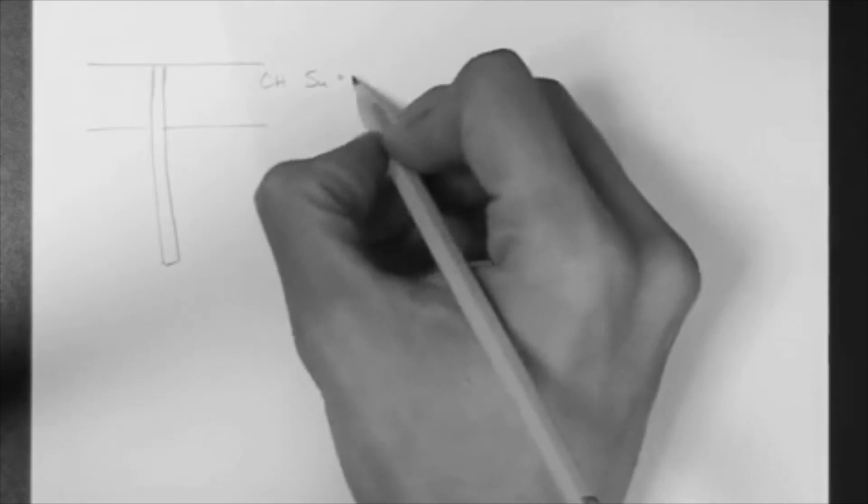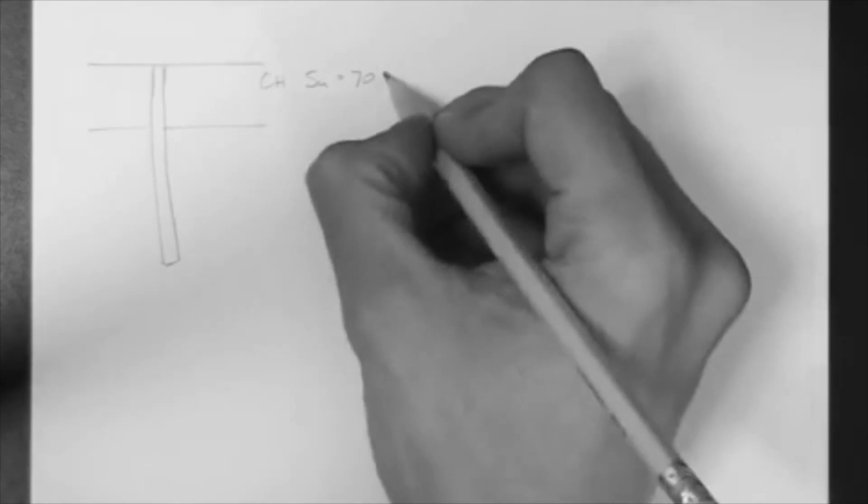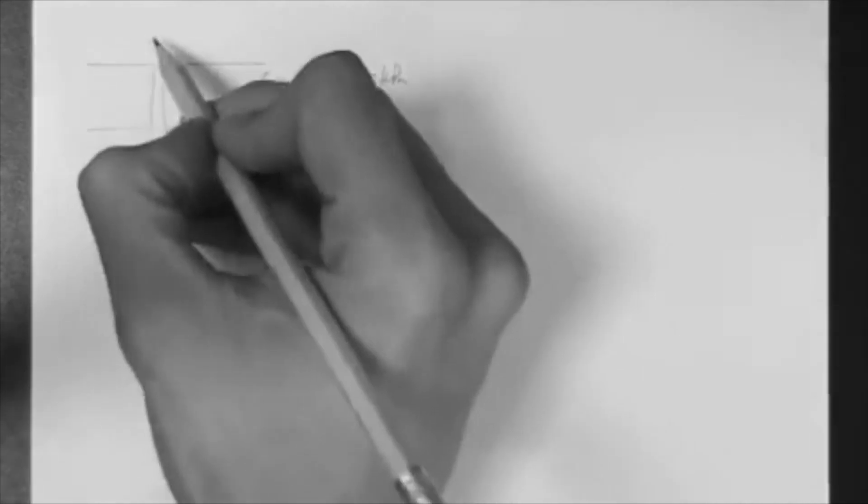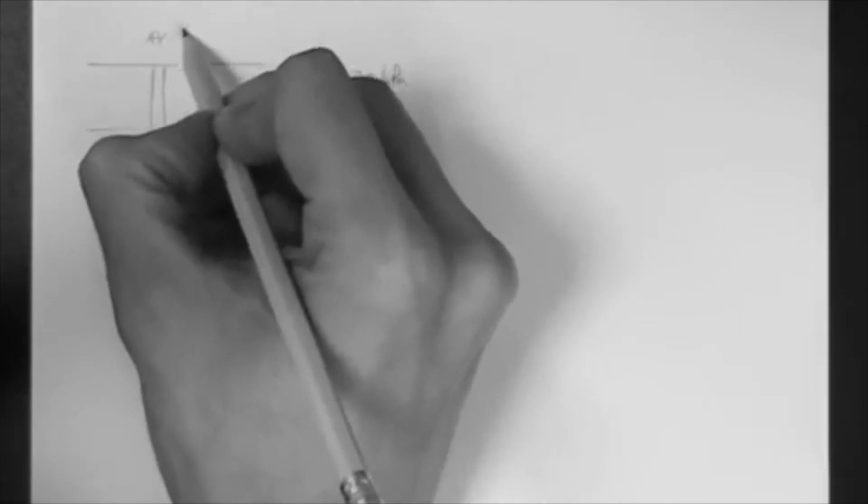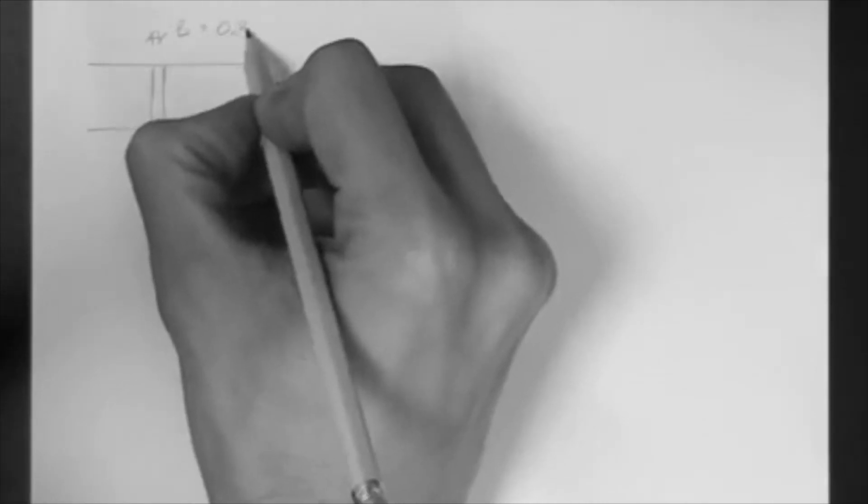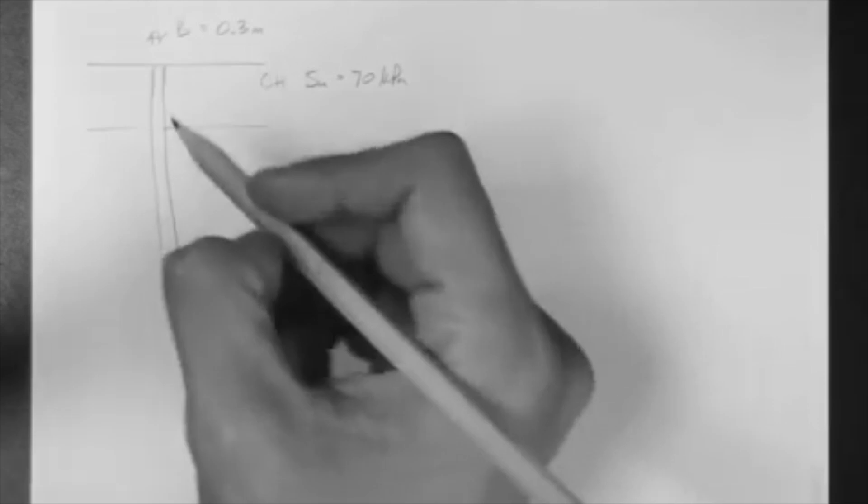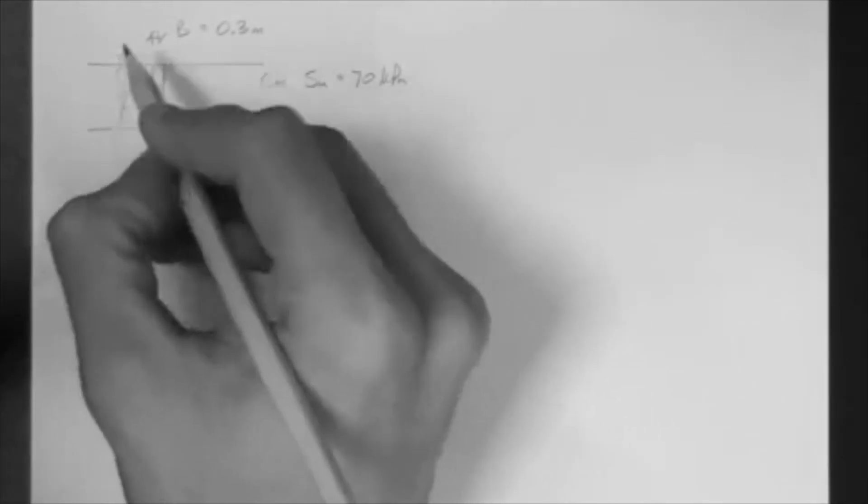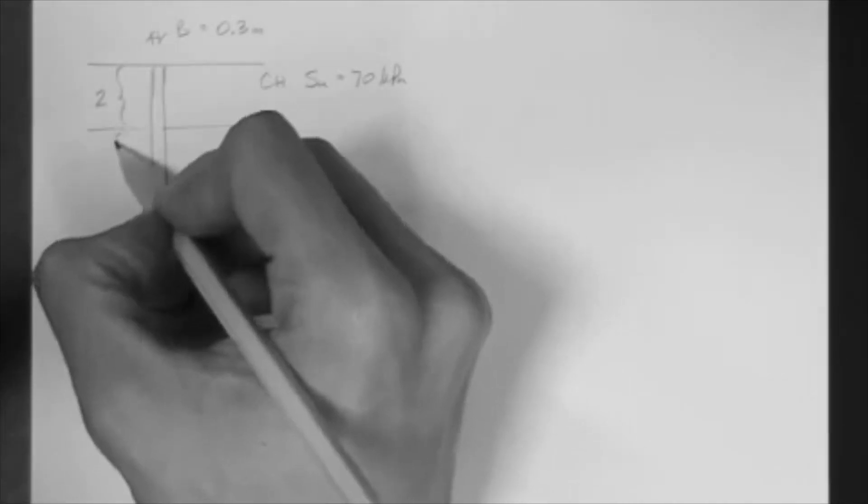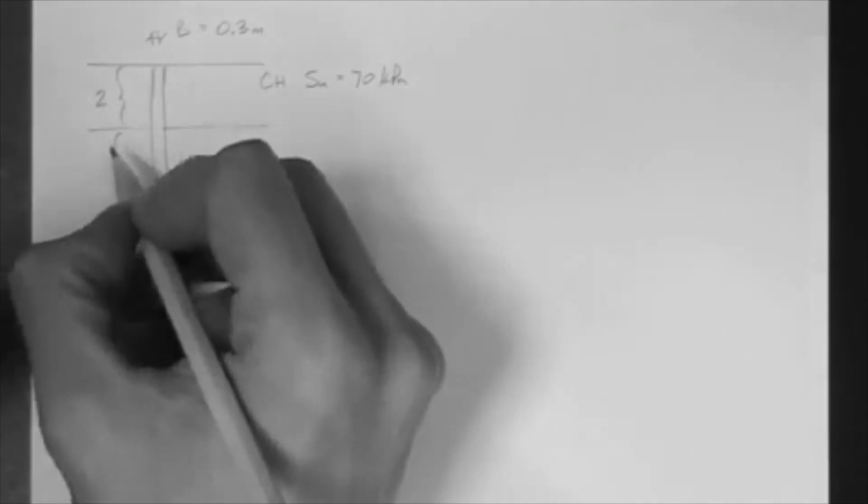The SU is 70 kPa. Let's say that the B is 0.3 meters, that's the diameter. Let's say that the thickness of this layer is 2 meters. Let's say that the embedded length here of the pile is 5 meters.